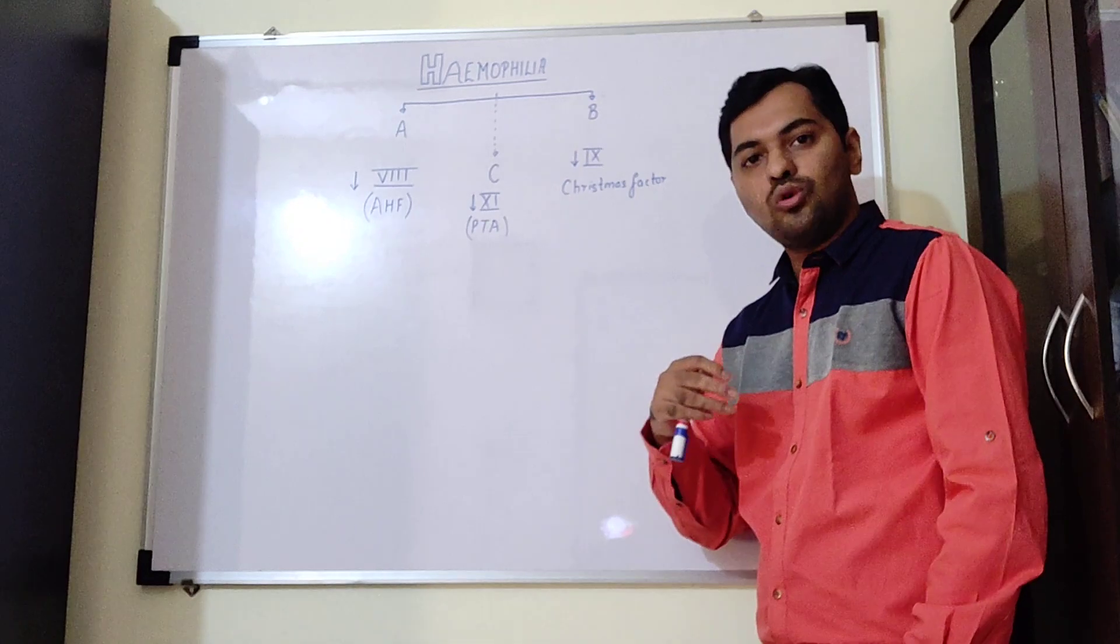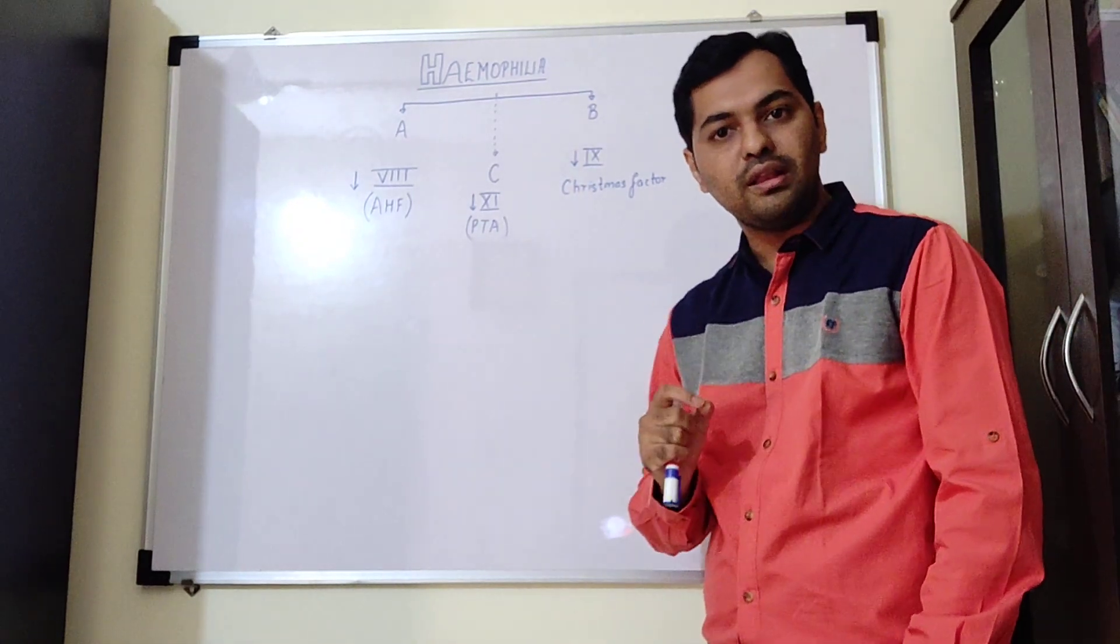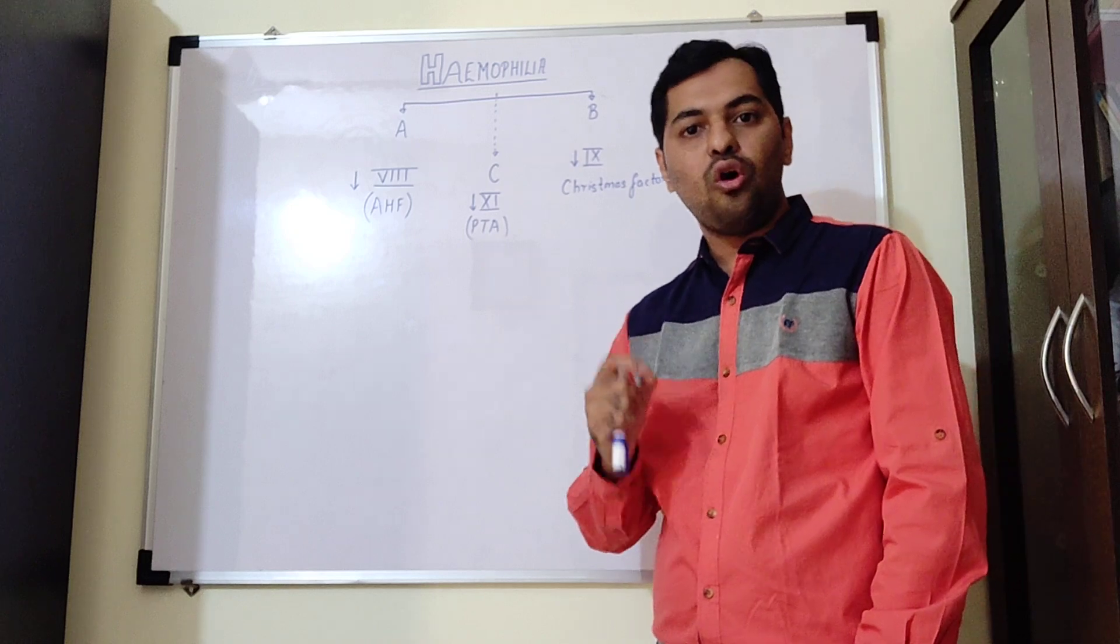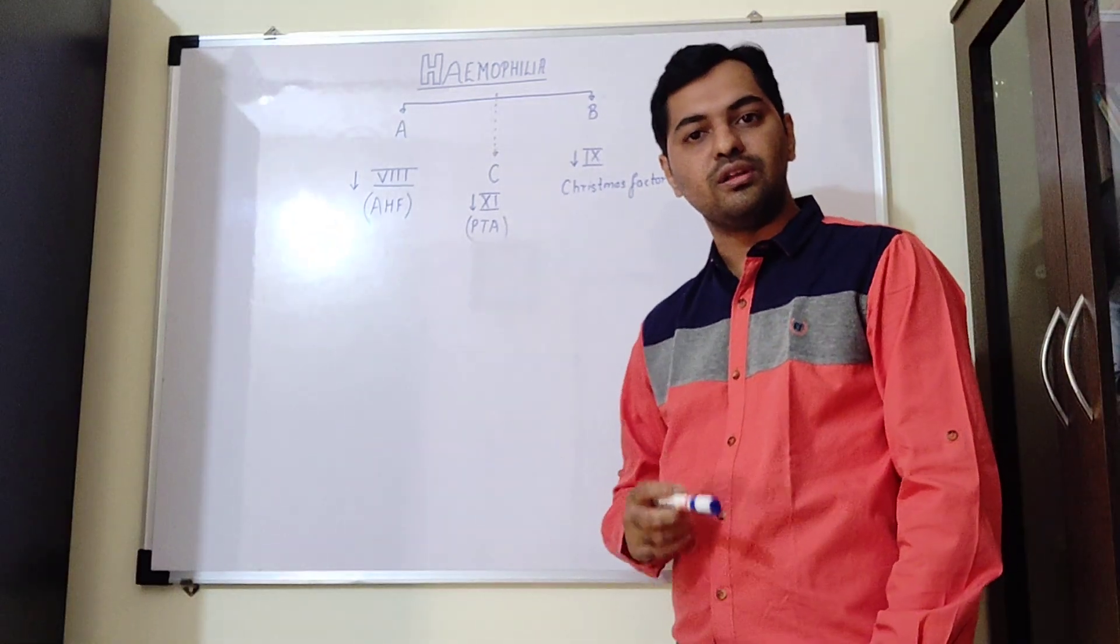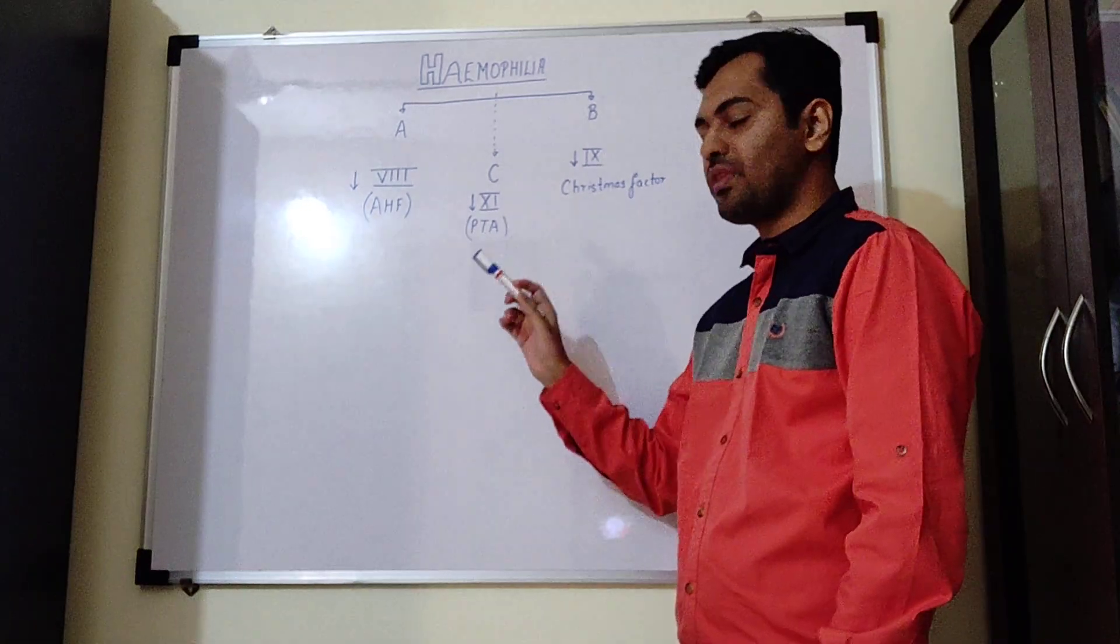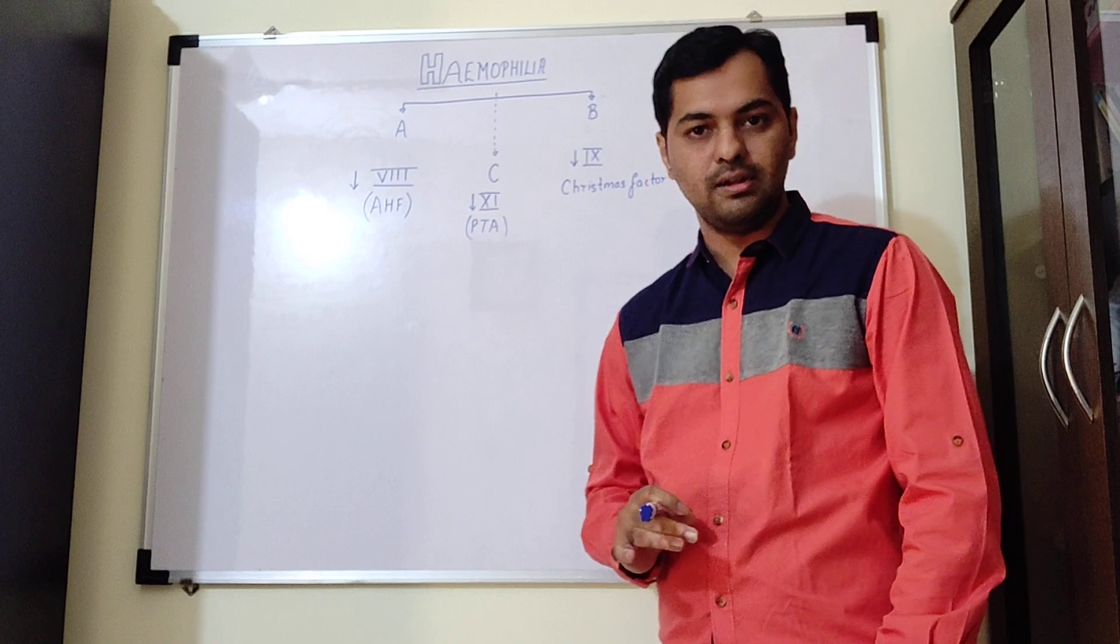There is also another type of hemophilia which is hemophilia C, wherein there is deficiency of clotting factor number 11. Clotting factor number 11 is known as PTA, that is plasma thromboplastin antecedent.